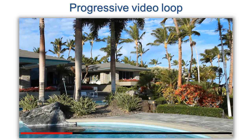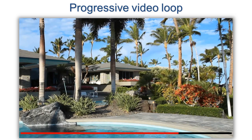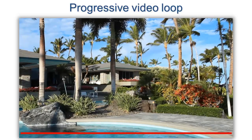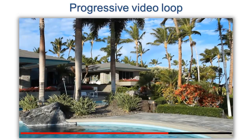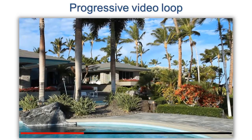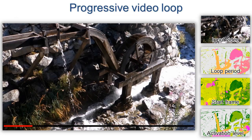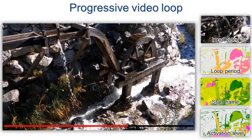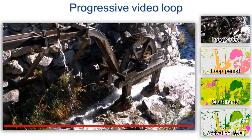We start with a static image and gradually add dynamism as the slider moves to the right. We can also jump to any desired level of dynamism. Here is another example — the user can quickly adjust the level of scene activity depending on personal taste or mood.